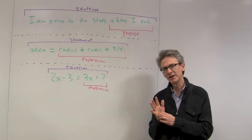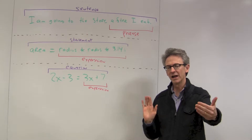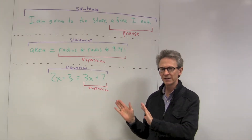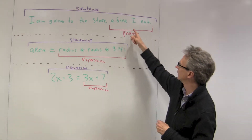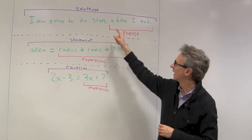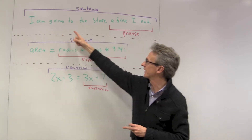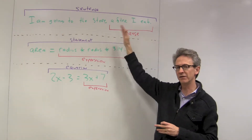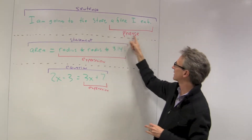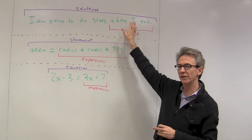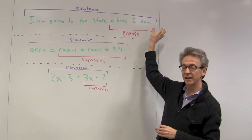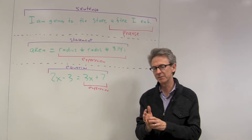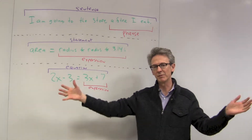An expression is really part of a Java line of code — it's not the whole line of code. I think it's best understood through some analogies. If you think of the English language, you have a sentence like 'I'm going to the store after I eat.' That's a full sentence, a full thought. The sentence can have parts, and one part is called a phrase, like 'after I eat.' It sort of hangs together, it's part of the sentence, but it's not a full statement by itself.